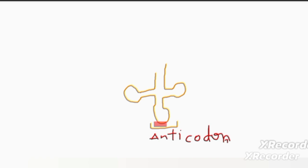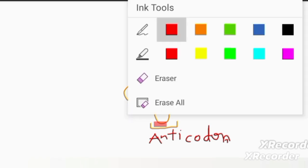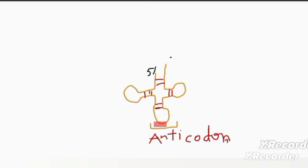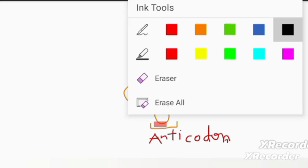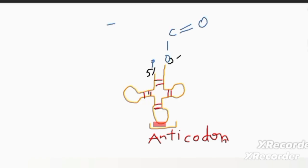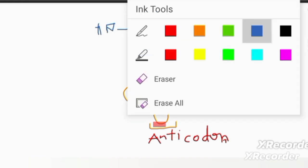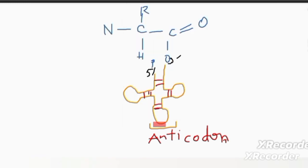The first step is activation of amino acids, which is basically the binding of an amino acid to transfer RNA. At the three-prime end, an amino acid attaches with the help of ATP and the enzyme amino acyl transfer RNA synthetase. The amino acid has a carboxyl group, alkyl group, amino group, and hydrogen group, and it attaches at the three-prime end. This whole molecule composed of transfer RNA and amino acid is known as amino acyl transfer RNA. This is known as amino acid activation.